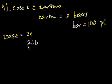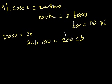And then each of these boxes is going to have 100 paper clips, so times 100. So that is equal to 200CB paper clips. And that is choice C. They wrote BC instead of CB, but that's the same thing. So that is choice C.